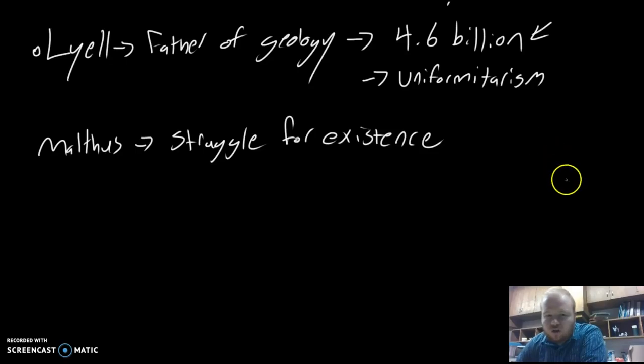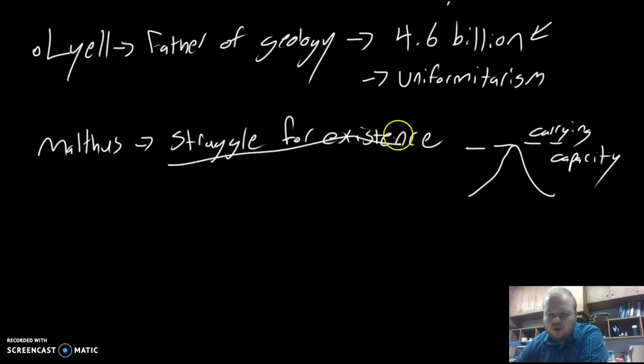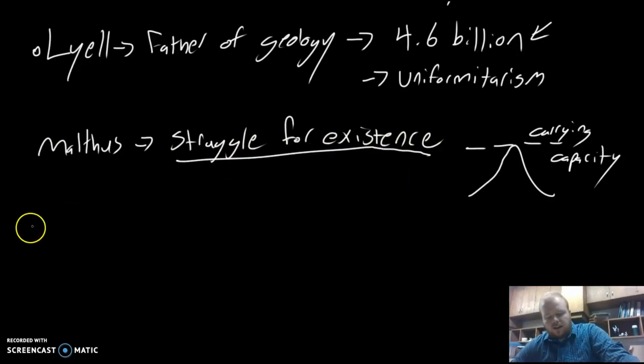Eventually, populations are going to get so large that they're going to hit this wall and crash. We in biology call this the carrying capacity. This concept is critical for Darwin because the struggle for existence helps shape his ideas.